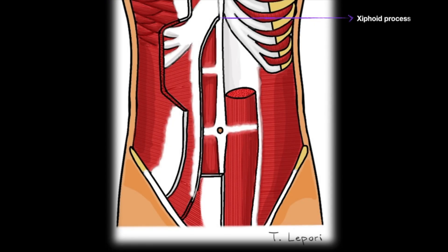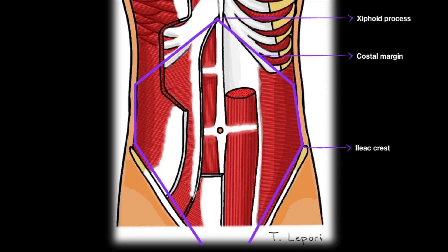The anterior abdominal wall is a hexagonal area bounded by the xiphoid process at the top, with delineation of the supralateral edges by the costal margins. Below, it extends along the iliac crests and narrows to the superior edge of the pubic bone of the pelvis in the midline. The inferolateral margins are defined by the inguinal ligaments bilaterally.